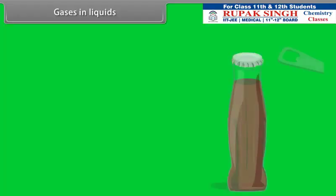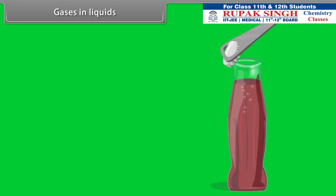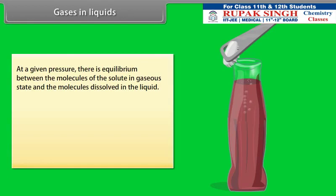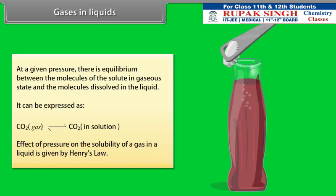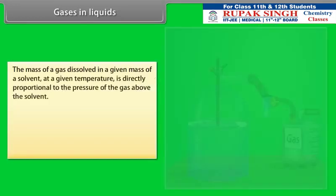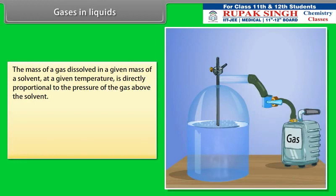Gases in Liquids: When a cold drink is opened, the carbon dioxide dissolved in it fizzes out rapidly. This represents an equilibrium situation. At a given pressure, there is equilibrium between the molecules of the solute in gaseous state and the molecules dissolved in the liquid. The effect of pressure on the solubility of a gas in a liquid is given by Henry's law, which states that the mass of a gas dissolved in a given mass of a solvent at a given temperature is directly proportional to the pressure of the gas above the solvent.